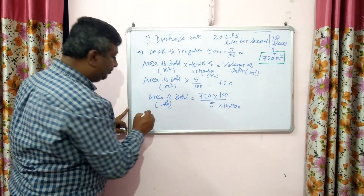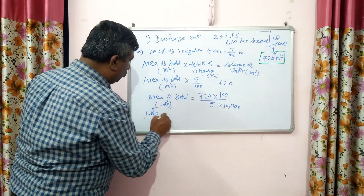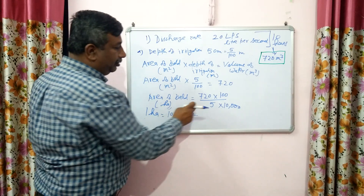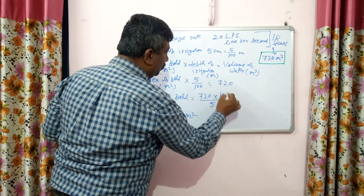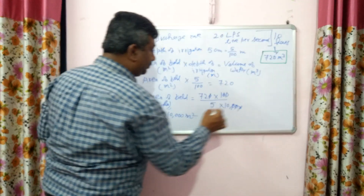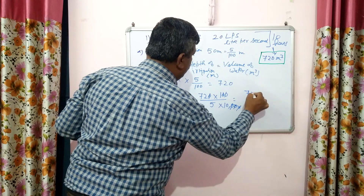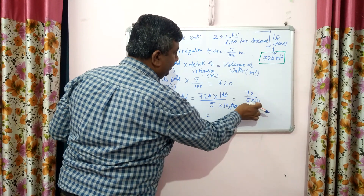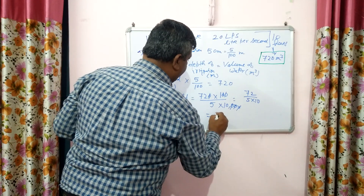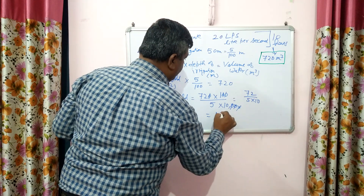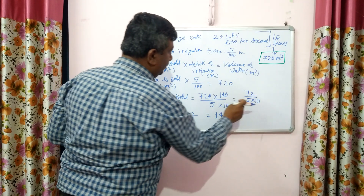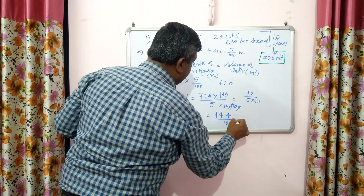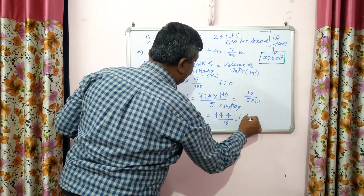Dividing: 72/5 × 10 gives 14.4/10, which equals 1.44 hectares.